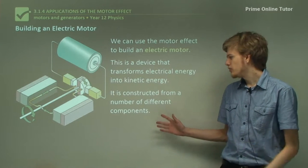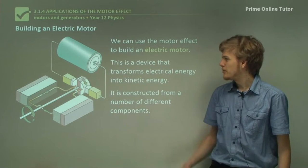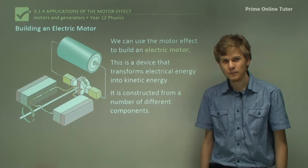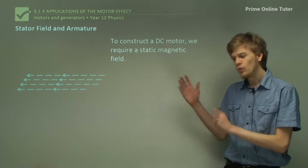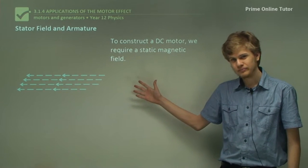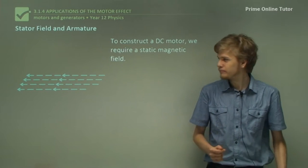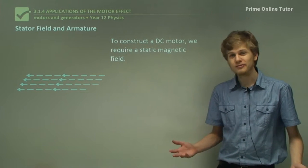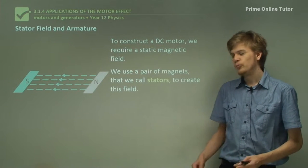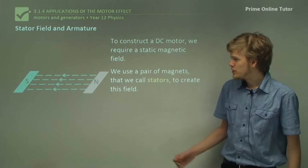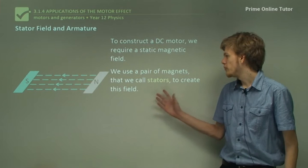It's constructed from a number of different components. We can see that this simple electric motor in the diagram has lots of different parts to it. First of all, we need a static magnetic field. The motor effect requires that we have a field before we can get anything moving. So how do we create a magnetic field? We're going to need magnets — a pair of magnets. These magnets don't move; they're static, so we call them stators.